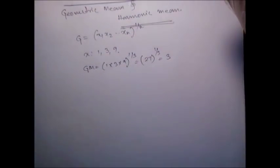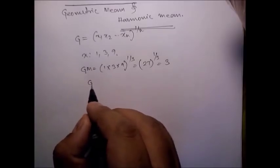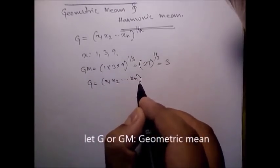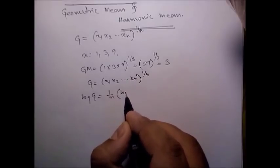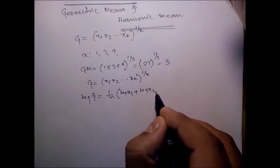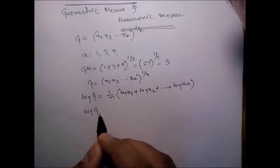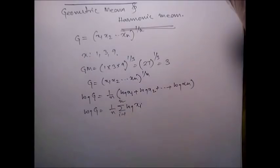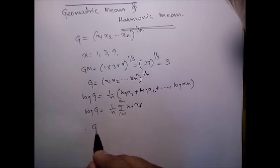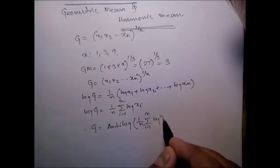We can also use the log function to calculate geometric mean. So G = x1·x2·...·xn to the power 1/n. If we take log both sides: log G = 1/n × (log x1 + log x2 + ... + log xn). So log G = 1/n × summation of log xi, where i = 1 to n. Taking antilog: G = antilog of (1/n × summation from 1 to n of log xi).